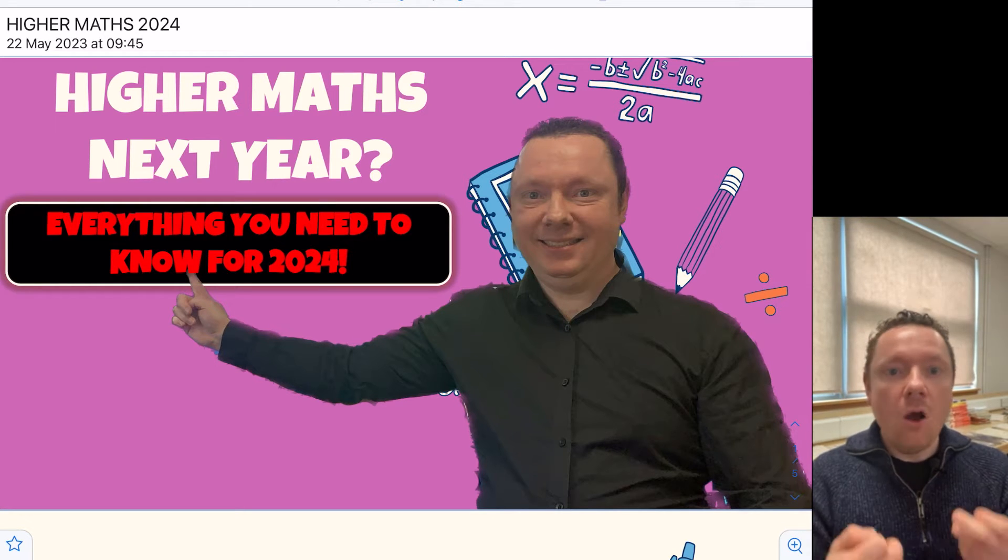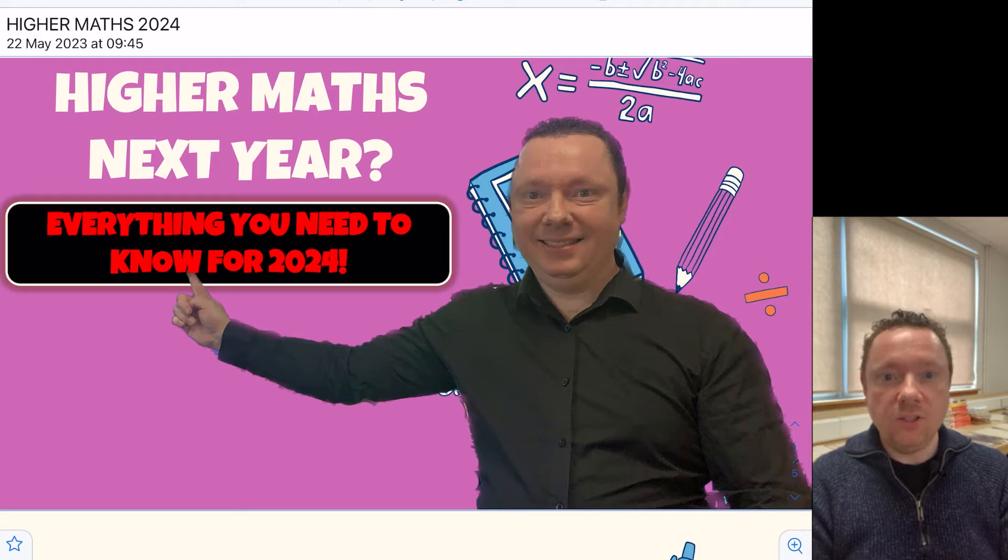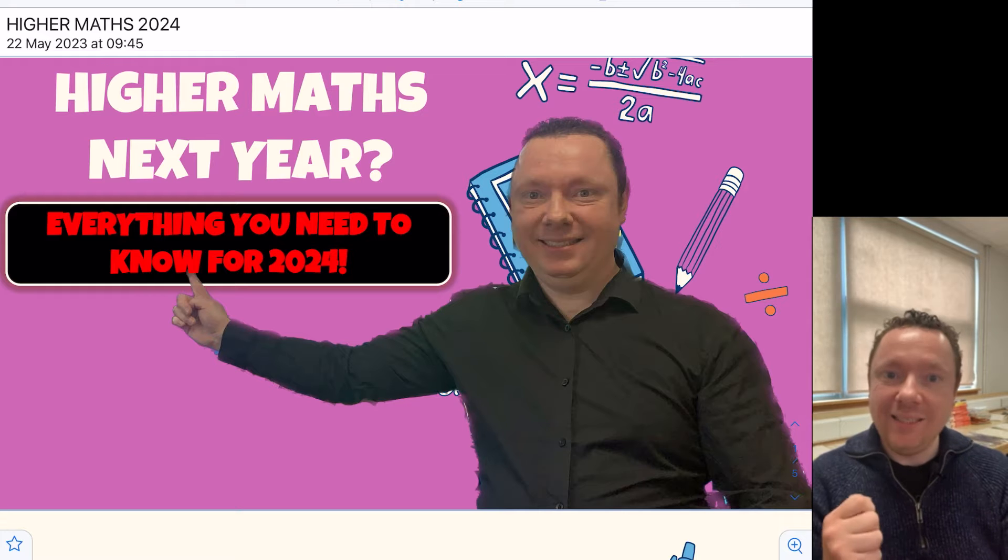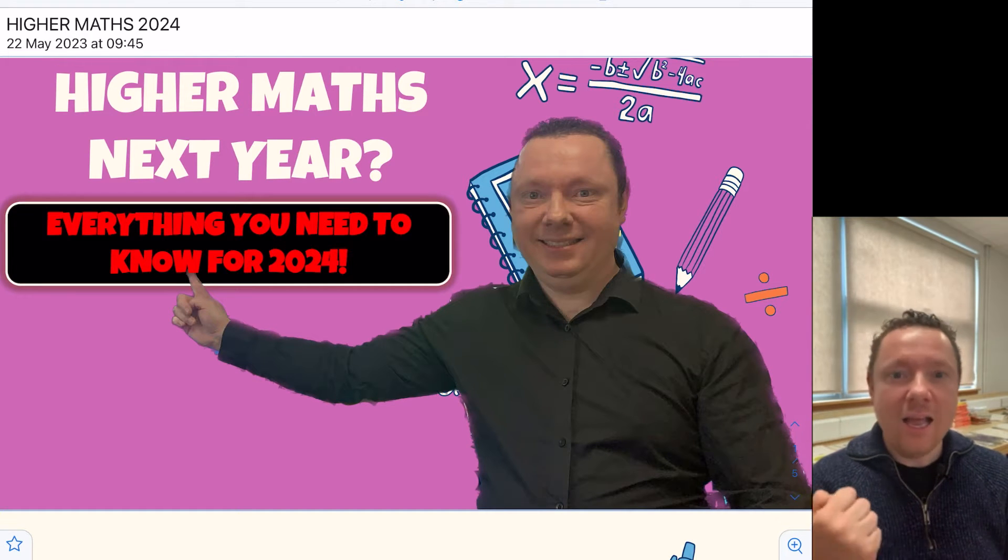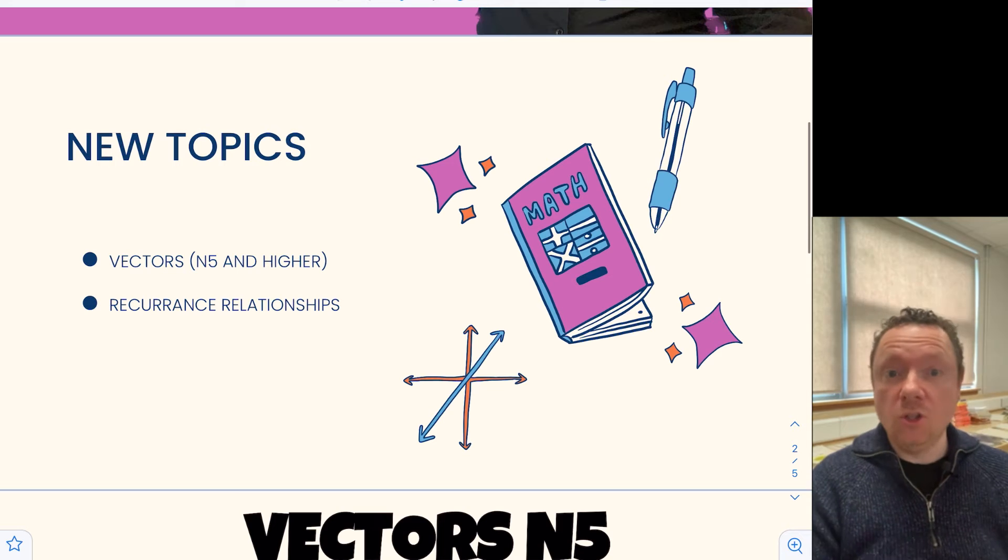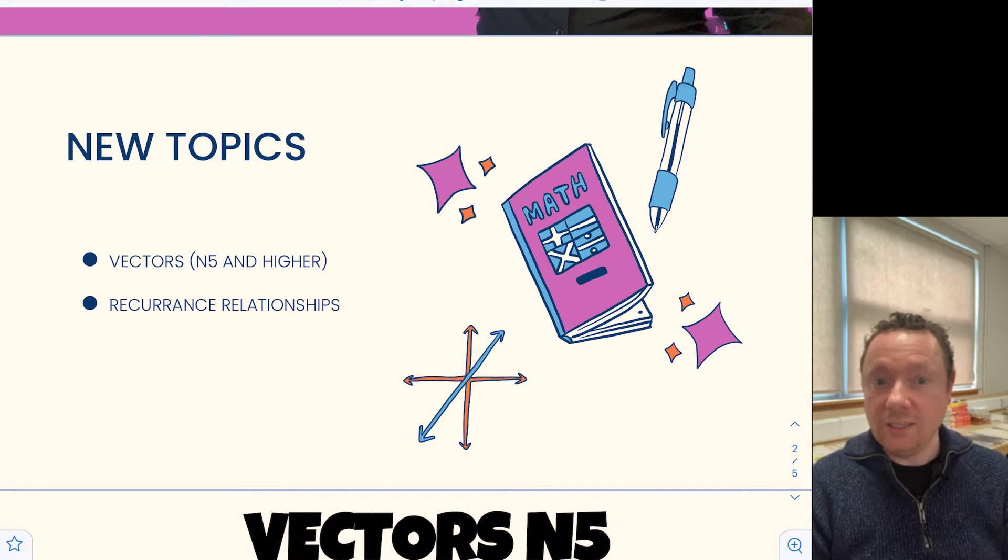On top of that, all of National 5 stuff that you've been taught now is assumed knowledge and there's certain things that you need to be good at to be successful at higher maths so you're not hampered. And this video aims to go through it all. So let's get started for everything you need to know for 2024 for your higher maths at this stage. We've got some new topics that are going to come in next year that students have not been taught for the last few years or at least not examined on.